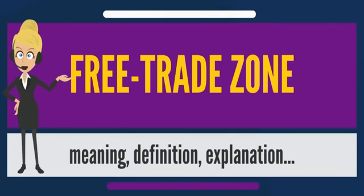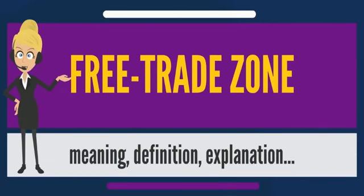The world's first free trade zone was established in Shannon, Ireland — the Shannon Free Zone. This was an attempt by the Irish government to promote employment within a rural area, make use of a small regional airport, and generate revenue for the Irish economy. It was hugely successful and is still in operation today.